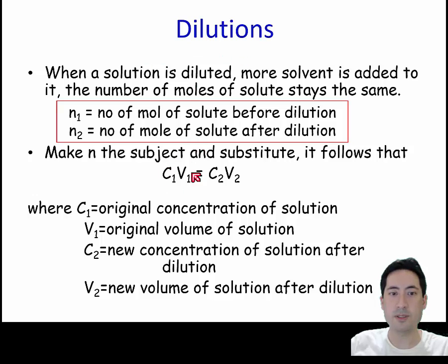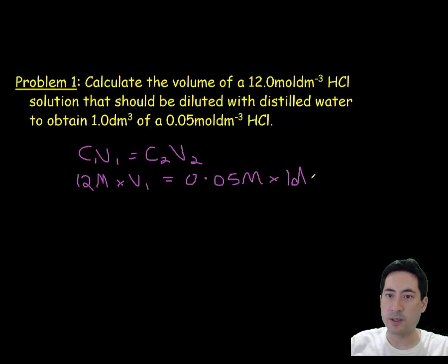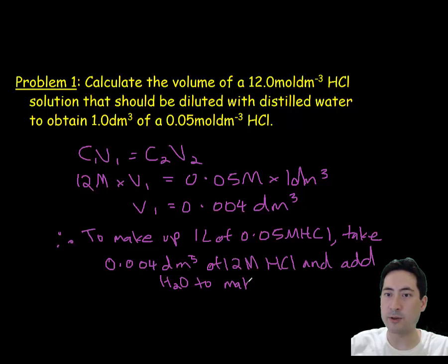It's important to know how to get a solution of the correct dilution that you want. We use this formula: C₁V₁ equals C₂V₂. Because the number of moles of solute will stay the same, we can just increase the volume when we come up with a new concentration. Calculate the volume of a 12-molar HCl solution that should be diluted with distilled water to obtain 50 mLs of a 1-molar solution. Using C₁V₁ equals C₂V₂ gives us 0.004 cm³. We grab 4 mLs of this 12-molar solution and dilute it out to 1 liter, which gives us 1 liter of 0.05-molar HCl.